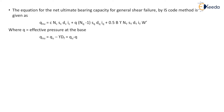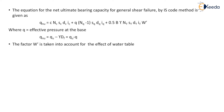Since qnu = qu − γ·Df, that is ultimate pressure minus surcharge, hence qnu = qu − q. The factor W' is taken into account for the effect of the water table.